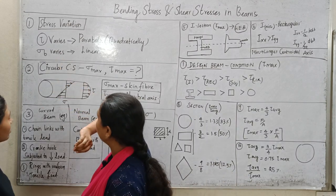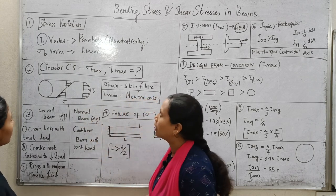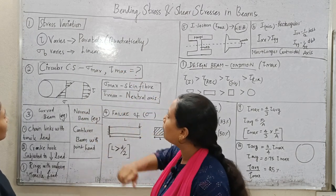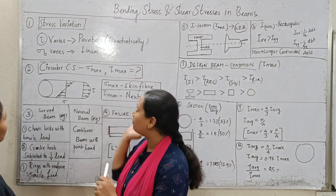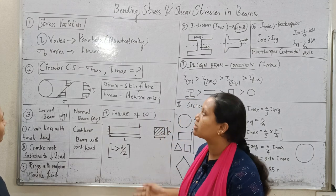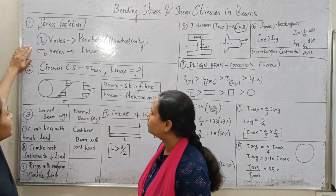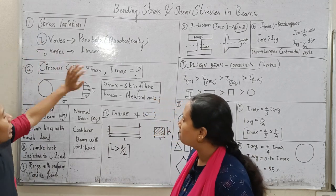That is linear. So shear is the parabola, bending is linear. This is the variation, shear stress and bending stress. Shear stress is the parabola, bending stress is the linear.